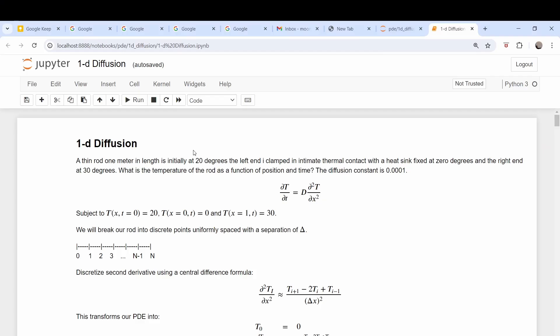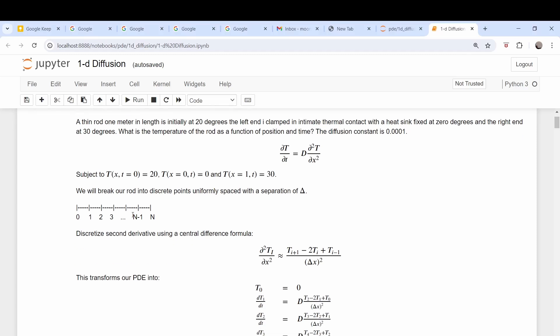So here we are in our notebook that we use for the diffusion problem, one dimensional. Again we are looking at this partial differential equation here, and in our original problem we had set the boundary conditions to be Dirichlet boundary conditions. At time equal to zero, at one boundary the temperature was zero, and at the other boundary it was 30, and all the other interior points were 20 degrees.